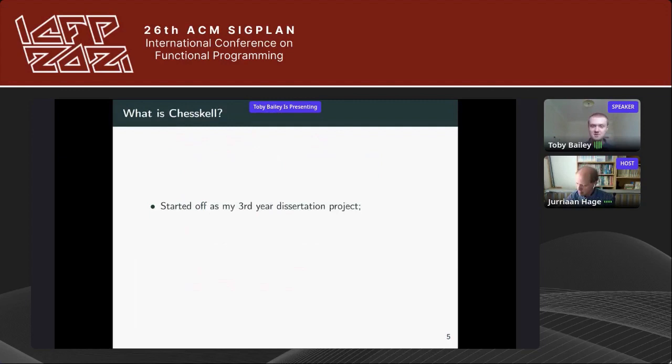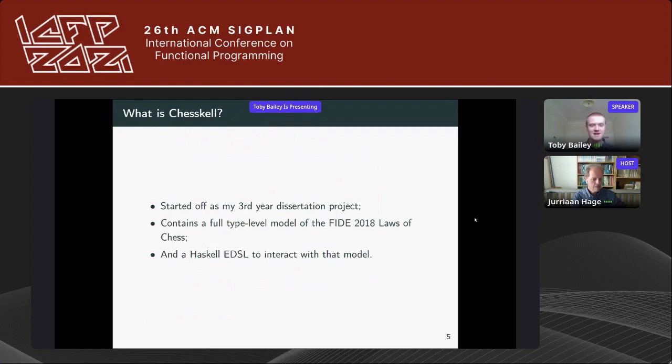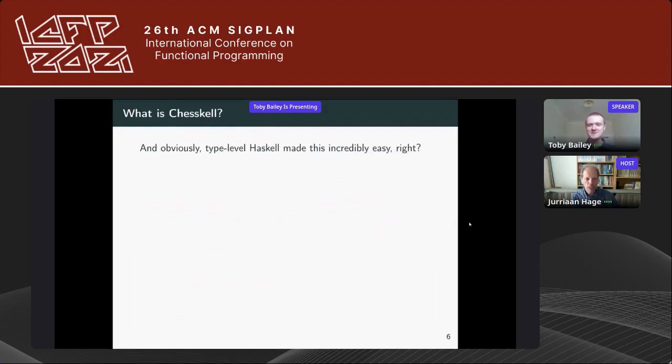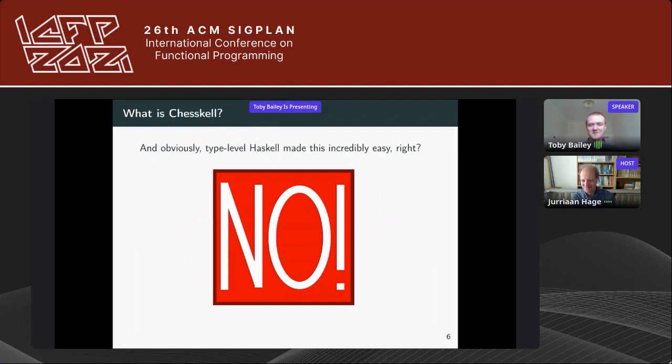ChessKal started off as a third year dissertation project. It contains a full type-level model of all International Chess Federation 2018 laws of chess — those that concern the game — and it comes with a Haskell EDSL to interact with that model. Of course, Haskell's type features made this a really smooth process, right? Well, no. There were a few hurdles, and this talk will take you through some of the interesting problems we faced.